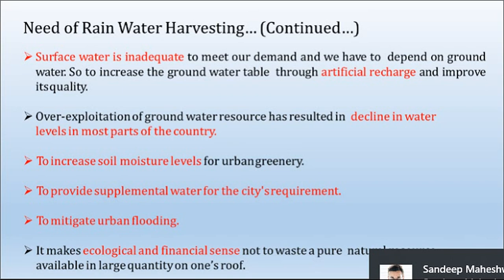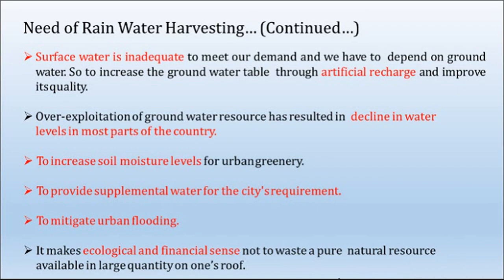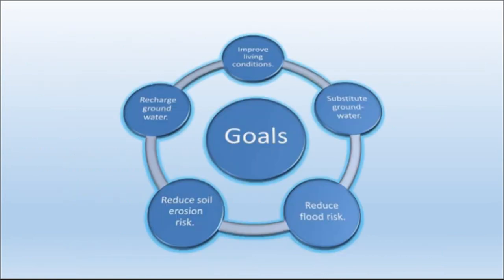To provide supplemental water for city requirements, rainwater harvesting is the technique needed. To mitigate urban flooding, the rainwater harvesting system proves to be efficient. It makes ecological and financial sense not to waste a pure natural resource available in large quantity on one's roof. In short, the goals of rainwater harvesting are: to improve living conditions, to substitute groundwater, reduce flood risk, reduce soil erosion risk, and recharge groundwater.